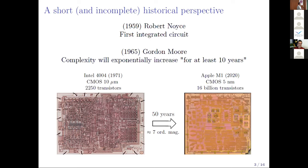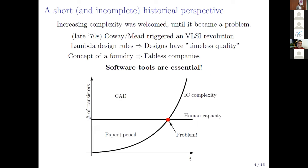The Apple M1 has 16 billion transistors on one silicon die — that is 16 followed by nine zeros, a very big number. At first, the exponential increase in the number of transistors was welcomed. Engineers said, 'Great, we have more transistors — we can pack more stuff on a chip and reduce the number of chips.' But as you can see, the human capacity is constant; it hasn't changed in the meantime. At one point those two intersected, and we have a problem.